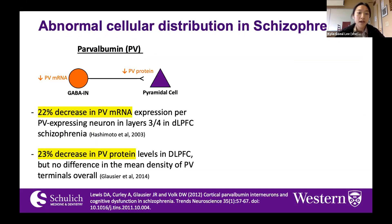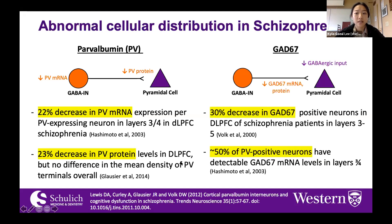These abnormal cellular distributions in schizophrenia include GABAergic neurons, and more specifically a subset of those — parvalbumin interneurons — seem to be affected. Literature consistently finds a decrease in parvalbumin mRNA that is layer-specific, occurring in layers three and four of the dorsolateral prefrontal cortex, as well as a decrease in protein levels in the dorsolateral prefrontal cortex.